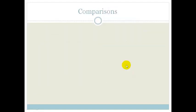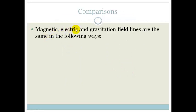So, let us compare them. Okay, first of all, your magnetic, electric, and gravitational field lines are the same in the following ways.